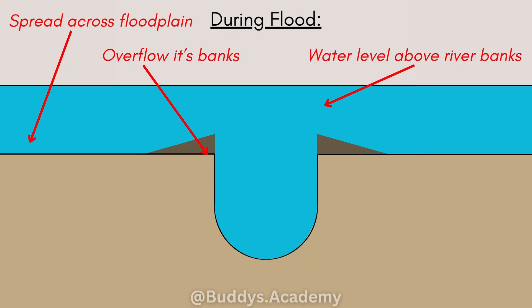As the water leaves the main channel and recedes — remember, when something is receding it's moving away — it's going to lose energy and it's going to drop its heaviest sediment closest to the riverbank. You can see how all the sediments are dropped right there on either side of the floodplain, things like your silt and your sand.